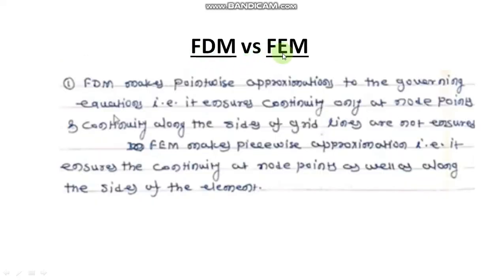FDM makes point-wise approximation to the governing equation. That is, it ensures continuity only at node points and continuity along the side of the grid lines are not ensured. But in FEM, it makes piece-wise approximation. That is, it ensures the continuity at node points as well as along the side of the element.